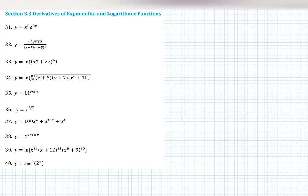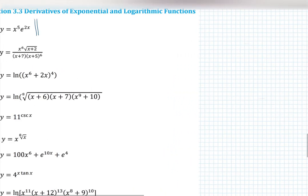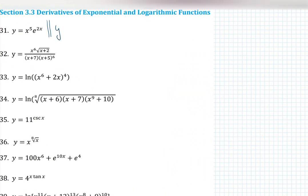The derivative right away is going to be the product rule, where u is x to the 5 and v is the exponential function e to the 2x. The product rule tells me to differentiate x to the 5 first, so that's going to be 5x to the 4, then copy the second function e to the 2x.